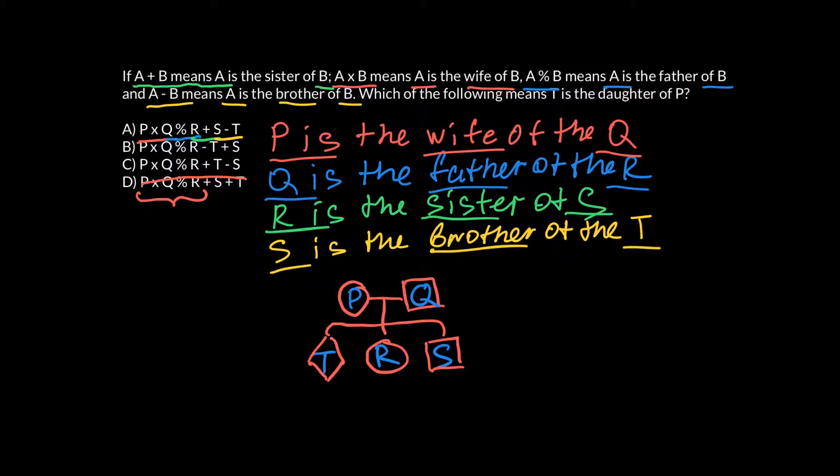And now we have to choose between these two answers. So we have to analyze the last couple. T plus S and T minus S. So what T plus S means? That first is the sister of the second. The question asks which means that T is the daughter of P. So the first is the sister of the second. As you see, the correct answer is B.